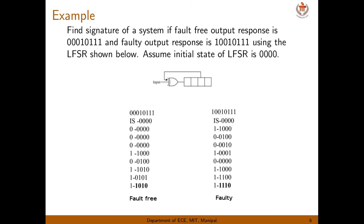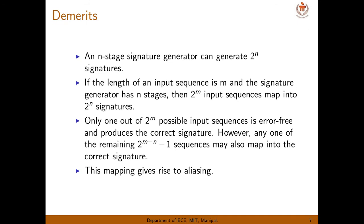In our example, M is 8 and signature length is 4, so 256 possible output sequences map to only 16 signatures. Many output sequences map to the same signature, so if there is a fault, there is a possibility the fault will be masked — the signature obtained will appear correct even though the output sequence is faulty. This can be reduced by increasing the shift register length, but there is a trade-off between the number of bits and the error detection rate.